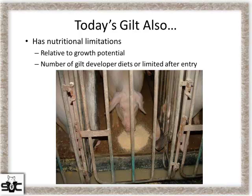In herds where we don't have the right number of gilt developer diets, or because of facilities we just can't feed that gilt right, or after she enters the sow farm we limit feed her — knowingly or unknowingly — that gilt is still growing at that time. So we create structure issues and bone strength issues that catch up with that gilt later on down the road as an older parity sow.